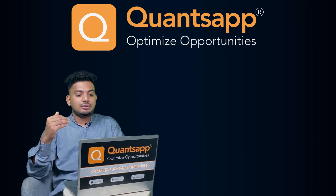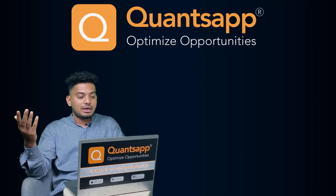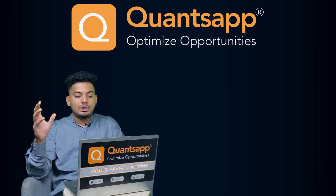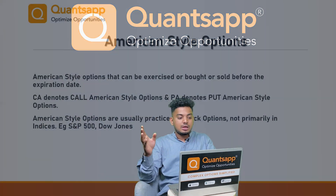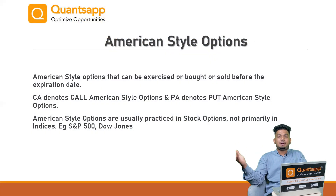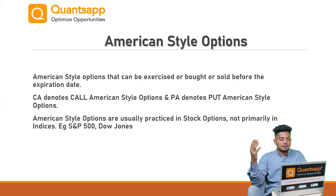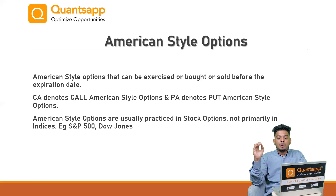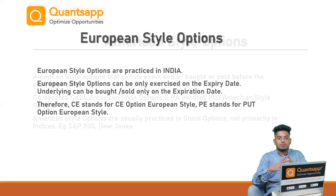Similarly, we can square off the contracts even before the expiration date. That is how an American style option works. American style options are usually practiced in stock options and are not primarily practiced in indices like S&P 500 or Dow Jones. That is why CA denotes call option American style, and PA denotes put option American style.